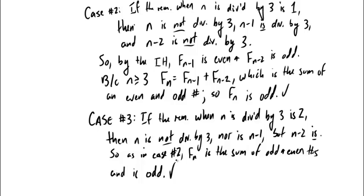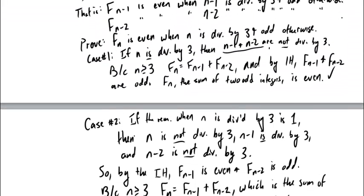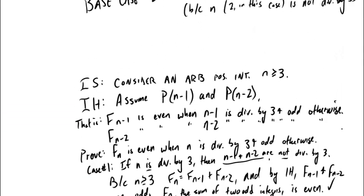That takes care of the entire inductive case. All we have to do is go back and fill in the base cases. This inductive case gives insight into why every third Fibonacci number is even: we start with two odd numbers, add them to get even, then the next two are odd (odd plus even, then even plus odd), and then we get two odds again giving even. The induction proof turns that insight into formal machinery.